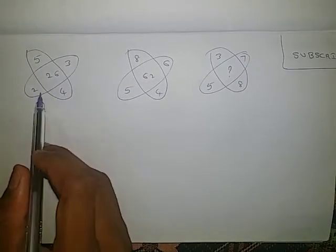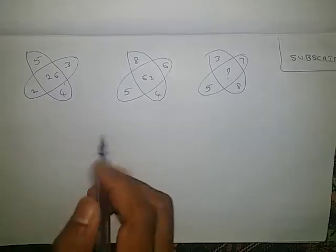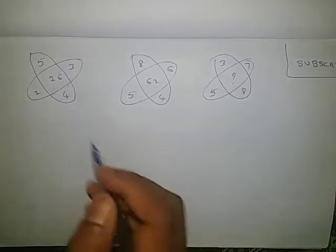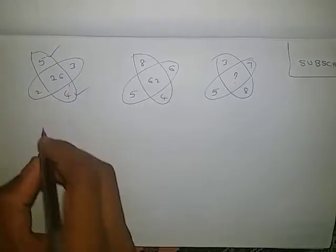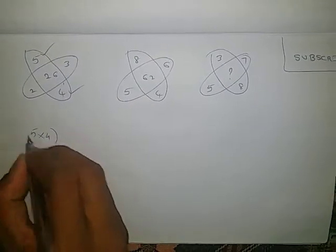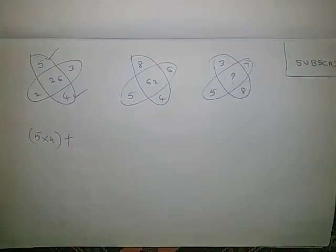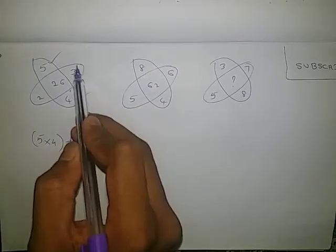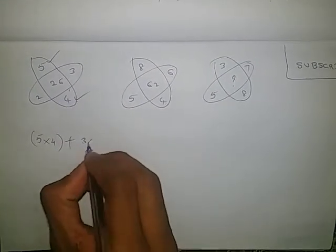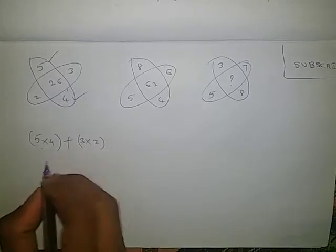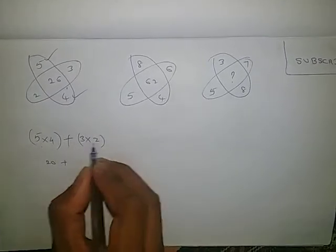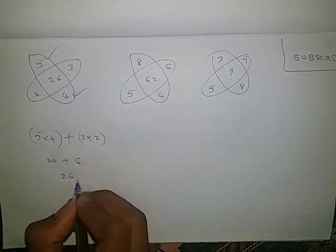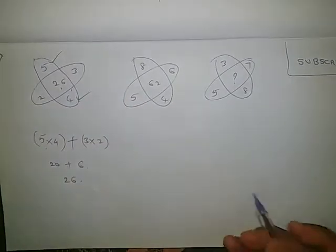Let us look at one more question. 5, 3, 4, 2 — middle number is 26. If we observe the outside numbers: 5 into 4 plus 3 into 2. 5 into 4 is 20, plus 3 into 2 is 6. 20 plus 6 is 26. That is the middle number.